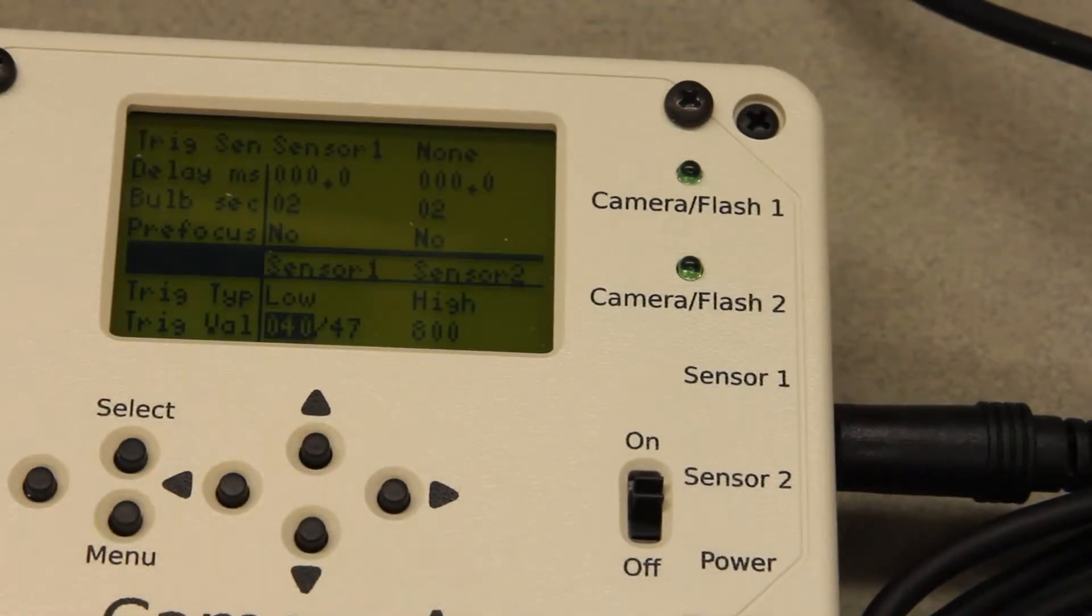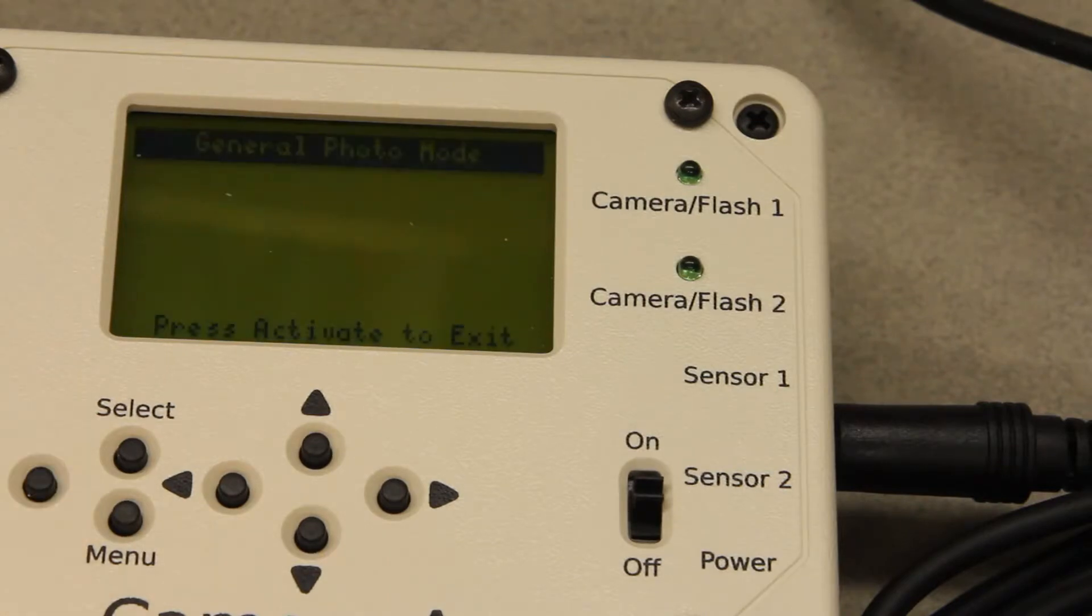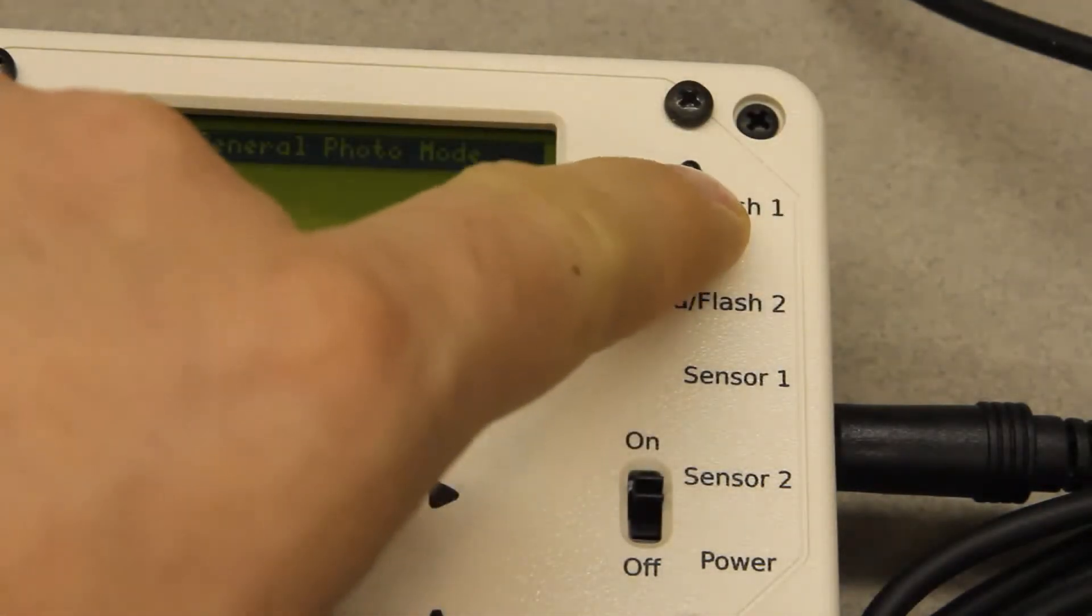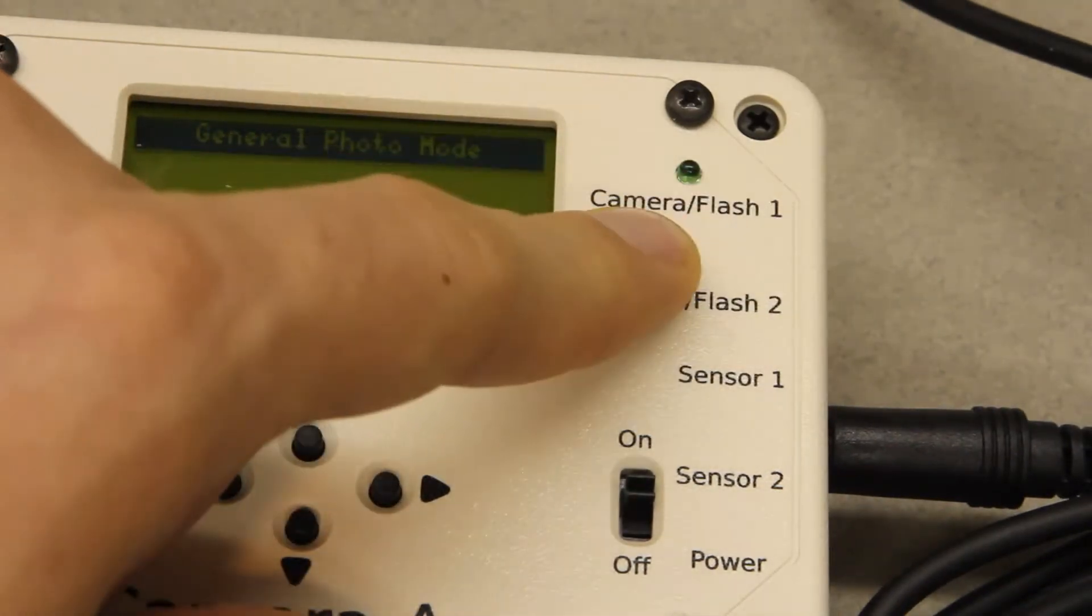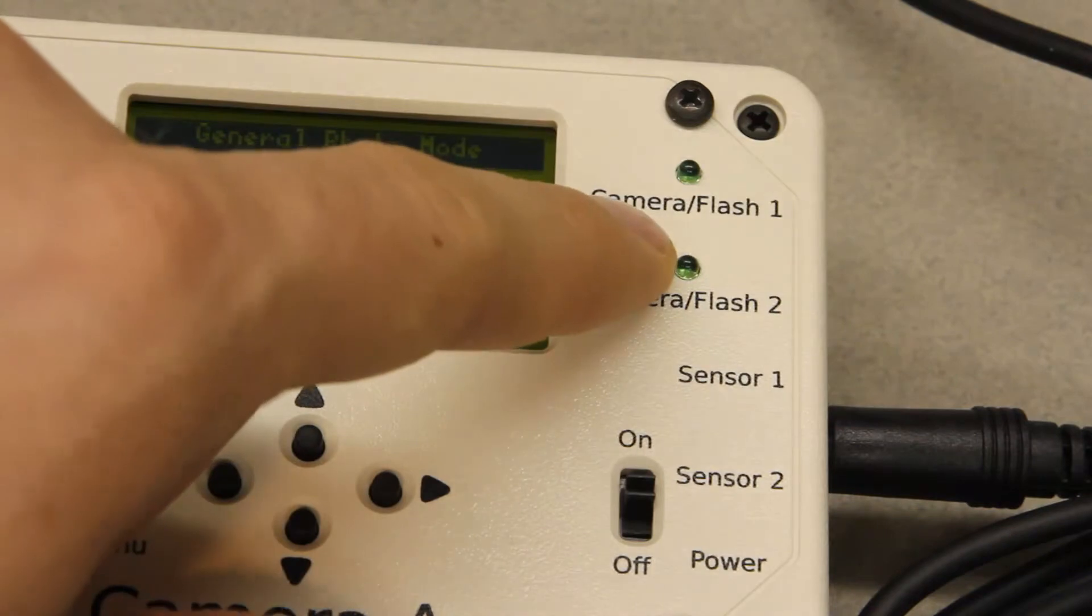That's pretty much all you should need to do for this sensor. So when I hit activate and nothing sort of happens, but when I press my hand right in front of it, this LED goes on which is basically indicating that this camera or the flash plugged into this port would be triggered.